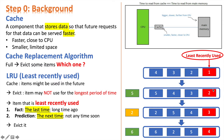If we access 2 at this moment, that means we used 2 recently, so 2 is no longer the least recently used item. Instead, 3 becomes the least recently used one. Finally, when 6 comes in, we remove the LRU item which is 3, put 6 in, and 4 becomes the LRU item now.